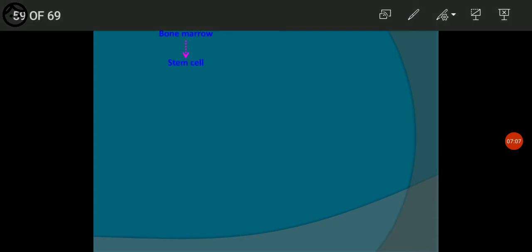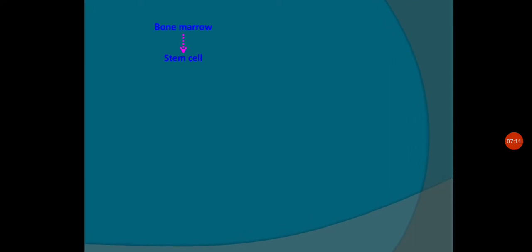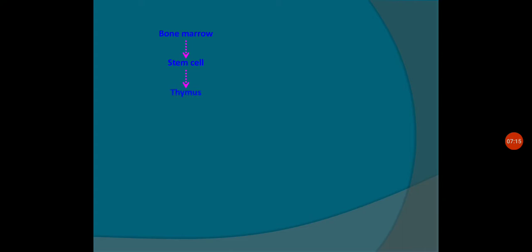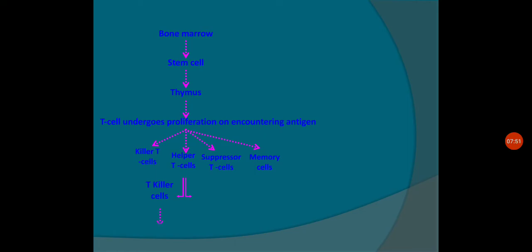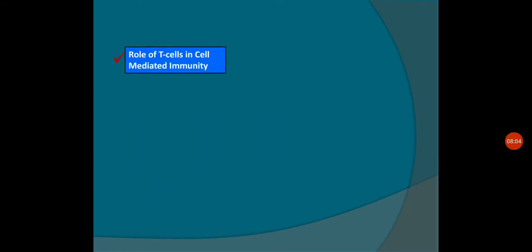In the bone marrow, stem cells are produced. These then go to the thymus and mature into T-cells, which undergo proliferation on encountering an antigen. They produce killer T-cells, with help from helper T-cells and suppressor T-cells. The four types of cells are activated by T-lymphocytes — killer T-cells bind with and destroy the antigen, while B-cells neutralize the antigen.